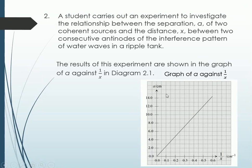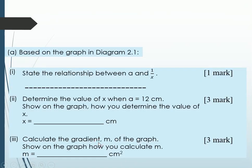A is the y-axis. 1 over x is the x-axis. And if you notice, the units are given to you. The graph line is also given to you. So this is question for part A. Based on the graph in diagram 2.1, Roman number 1. State the relationship between A and 1 over x. One mark. Number 2. Determine the value of x when A equals to 12cm. Show on the graph how you determine the value of x. This is a 3 marks question. Number 3. Calculate the gradient m of the graph. Show on the graph how you calculate m. 3 marks also. So let's start with the first question.